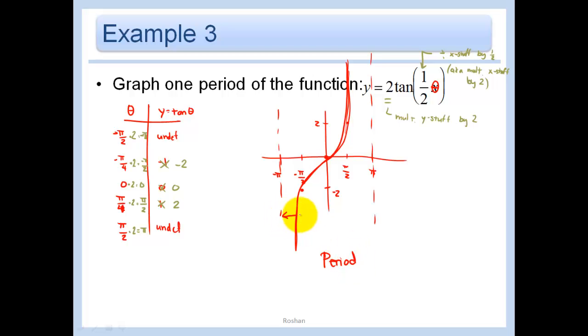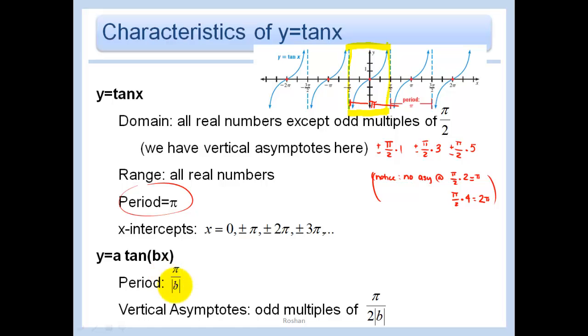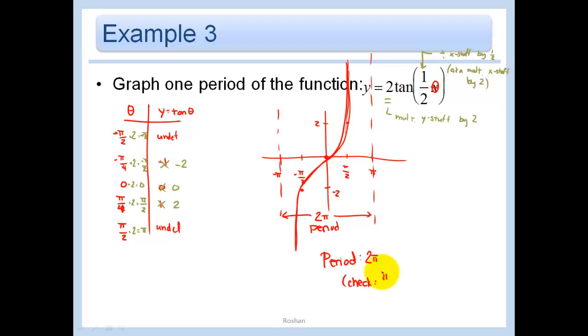Well, our period is simply from negative pi to pi. We go 2 pi, right? So that's our period. And let's just do a check of that. We said on our last slide that our period should be pi over absolute value of b. So pi over b is 1 half in this case, is equal to keep it, change it, flip it. And we have 2 pi. Yep, that worked.